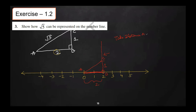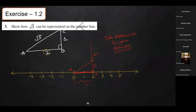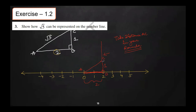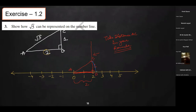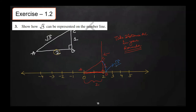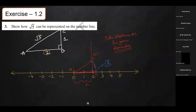Take the distance AC in your compass. Then draw an arc on the number line. The value at that point on the number line will be √5.